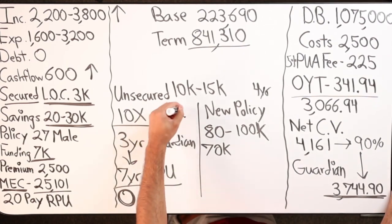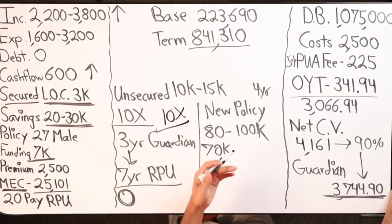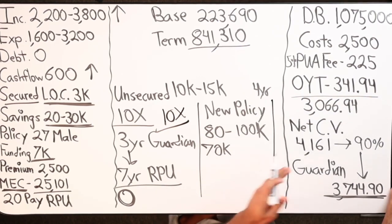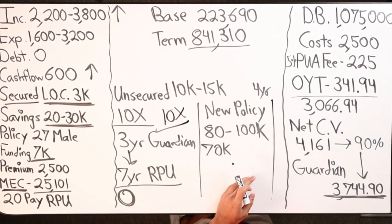And then guess what happens? If he 10x his income again, then you have a new problem. Then you start a new policy and you kind of just keep going. And this is great for people who are really young.